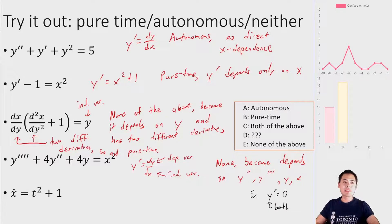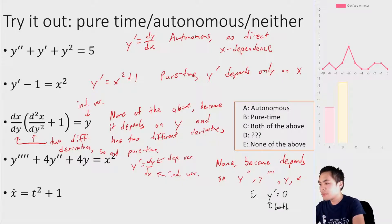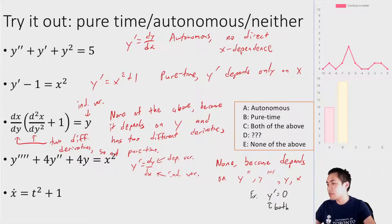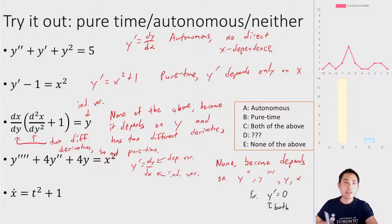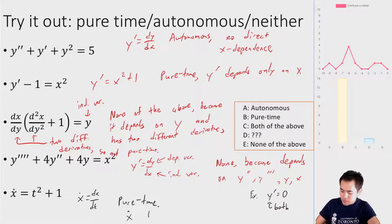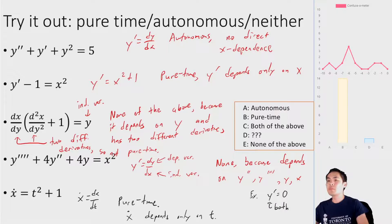One last example: x-dot = t² + 1. x-dot is dx/dt, so x depends only on t — this is pure time. X-dot depends only on t, confirming the classification.